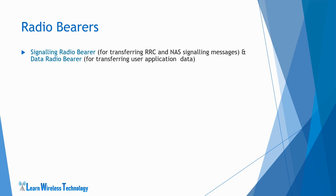When the UE is in RRC idle state, it does not have any signaling or data radio bearer set up. Hence, the UE needs to have an RRC connection with the network to be able to transfer or exchange data. For transferring NAS signaling messages such as attach and registration messages, or control signaling messages to set up user plane bearer, the UE requires to establish a signaling radio bearer.